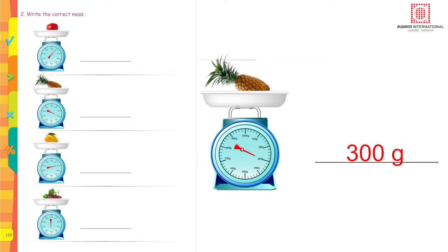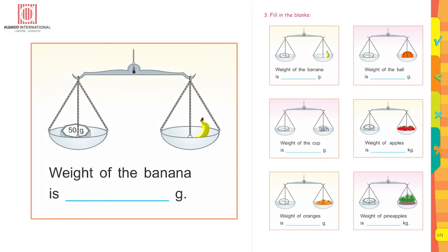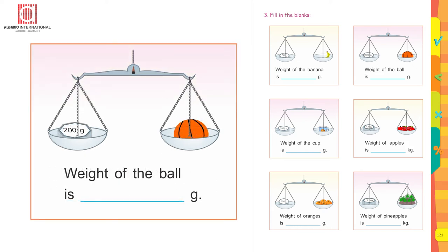Question number three — fill in the blanks. The weight of the banana is 50 grams. How can you tell? Because the weight placed on the balance is 50 grams and both pans are balanced equally. The weight of the ball is 200 grams.